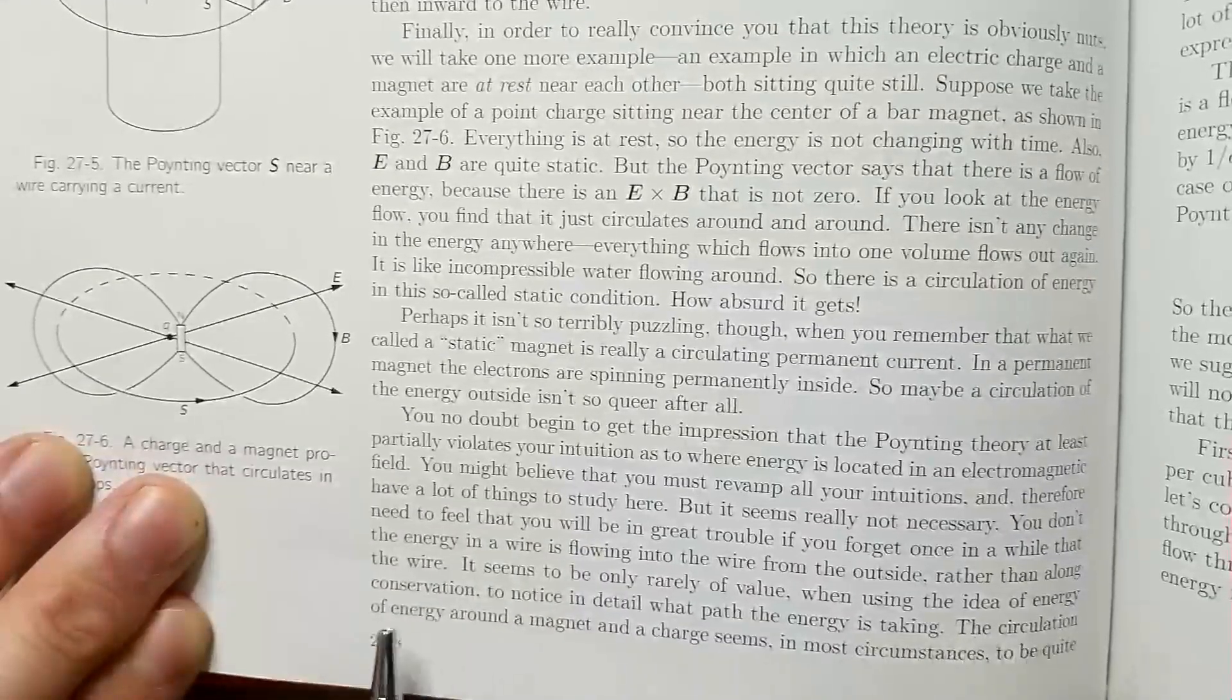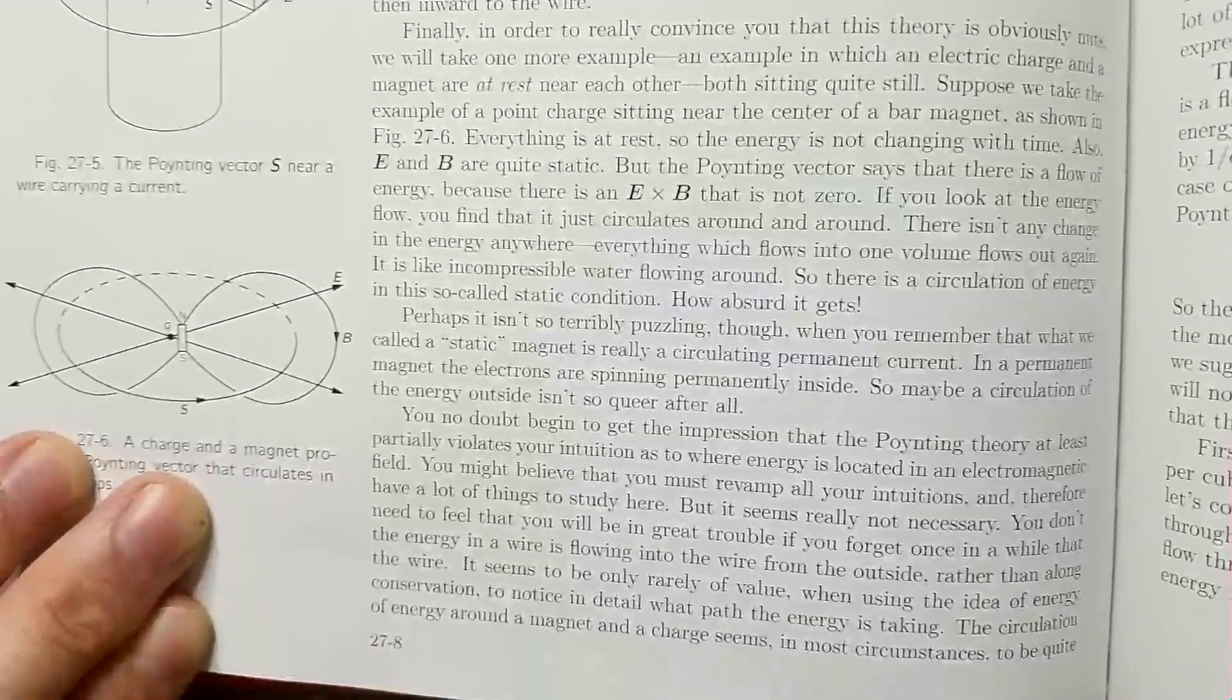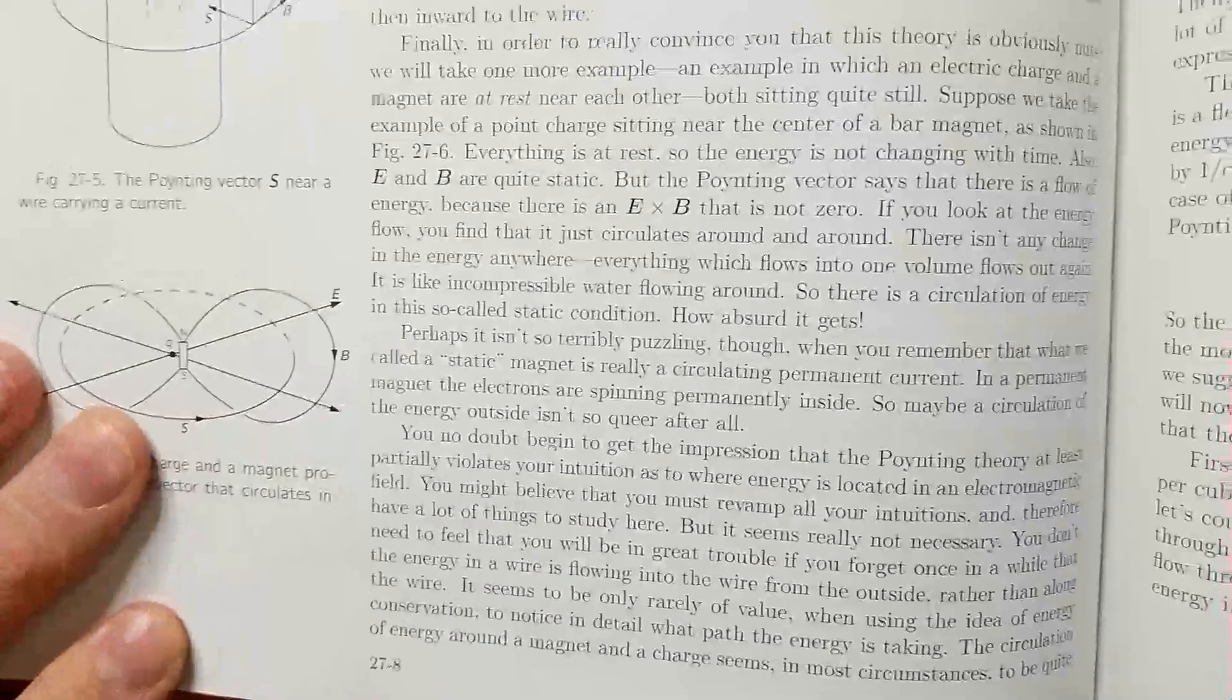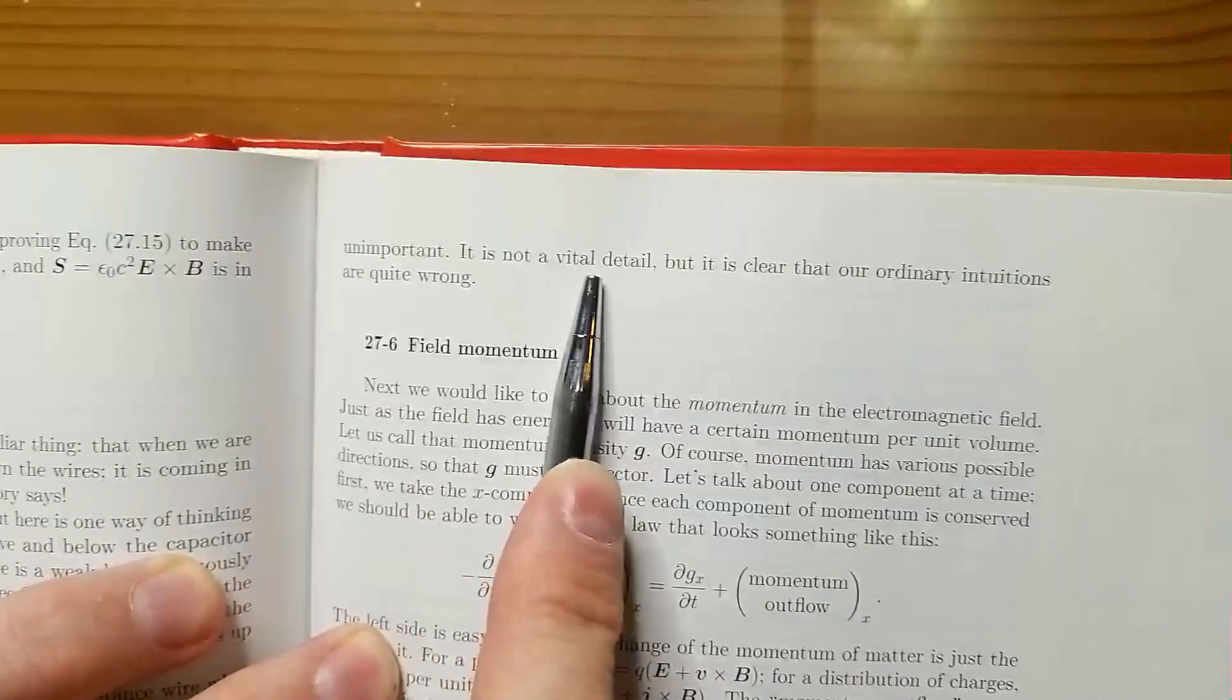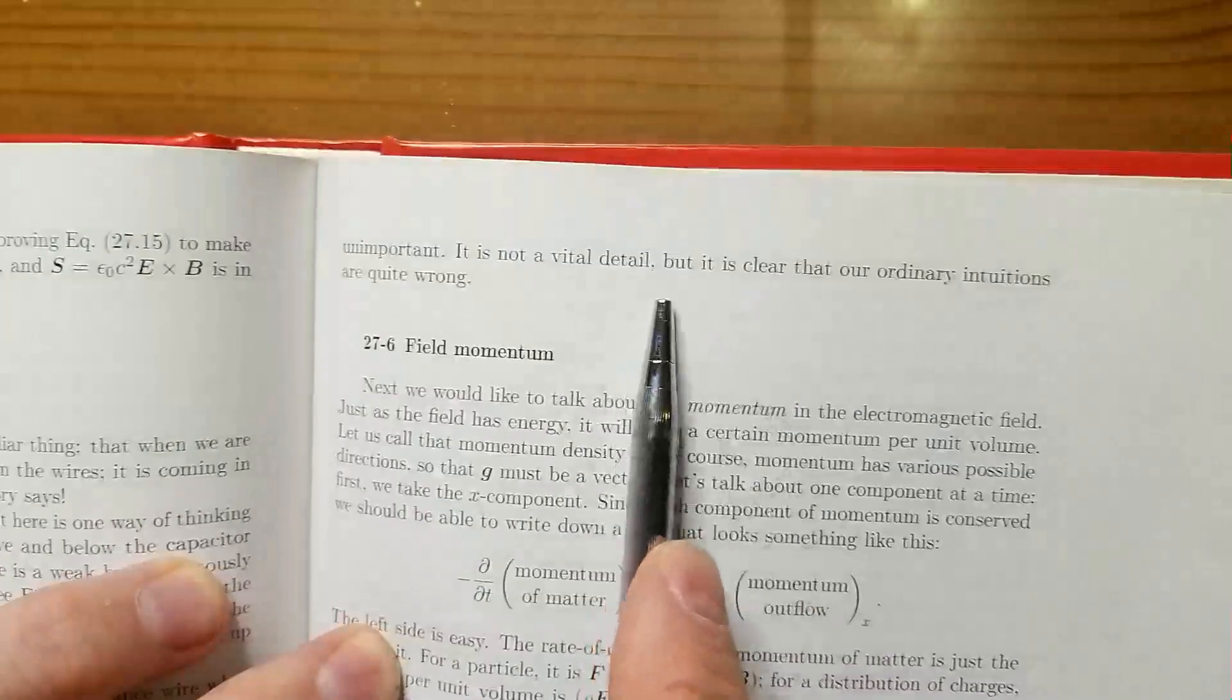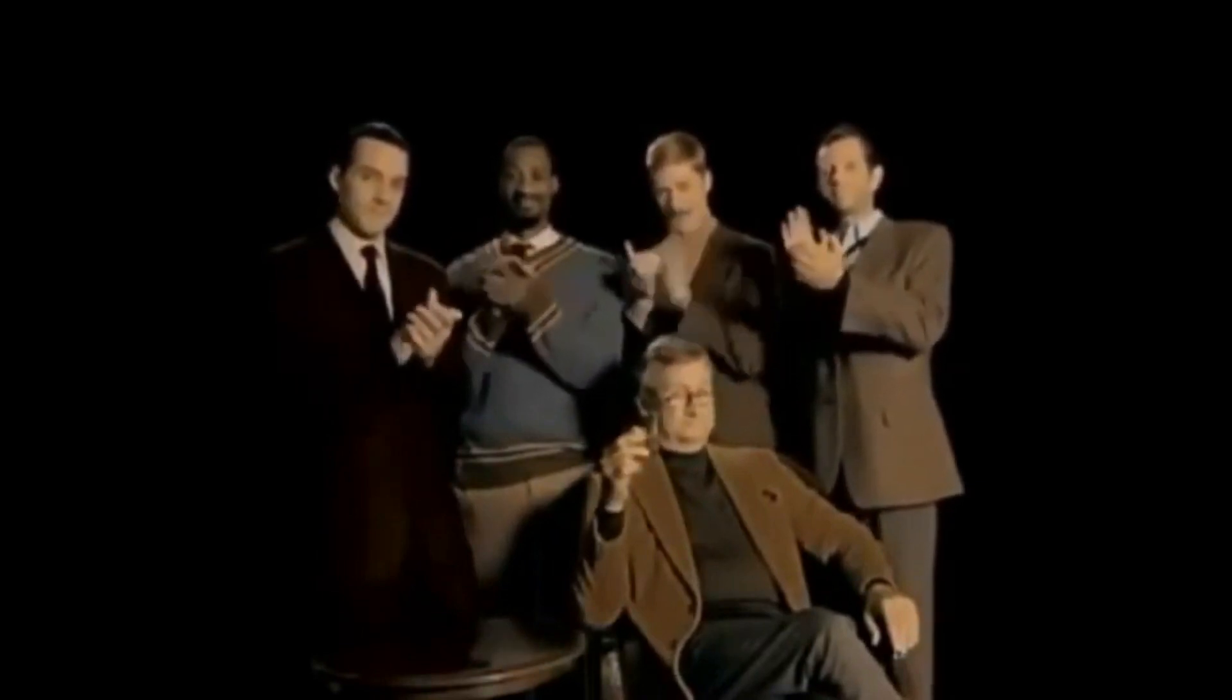The circulation of energy around a magnet and a charge seems, in most circumstances, to be quite unimportant. It is not a vital detail, but it is clear that our ordinary intuitions are quite wrong.